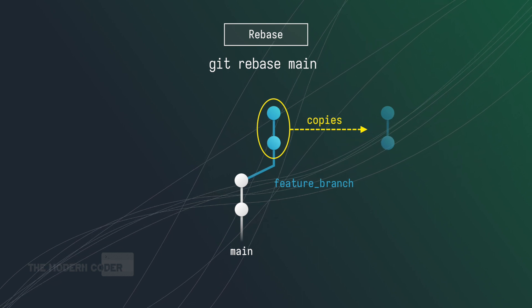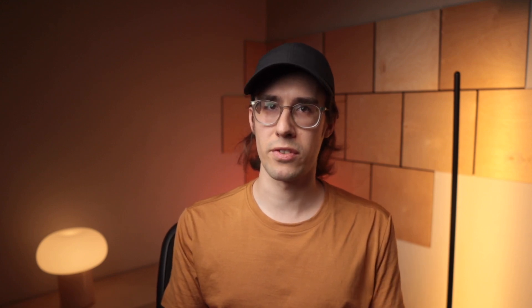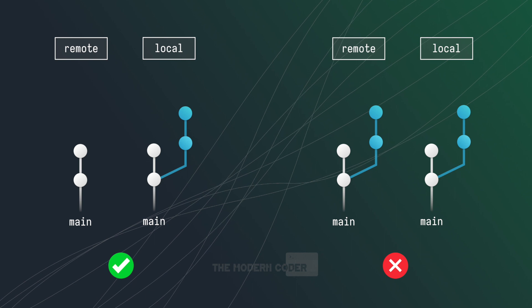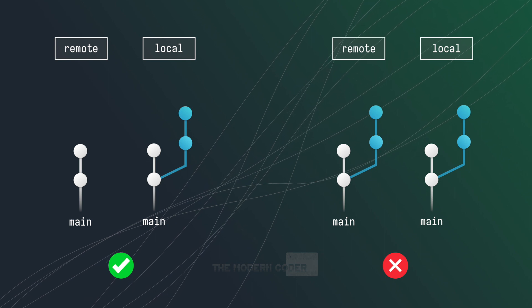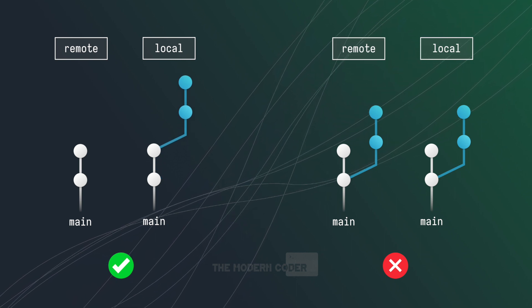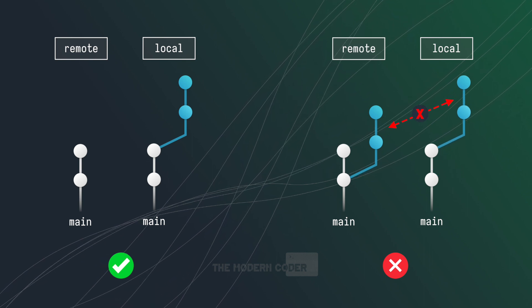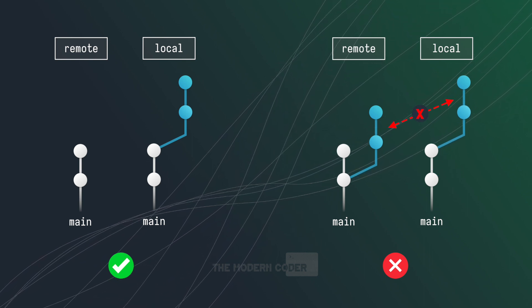For many intents and purposes this distinction is not very important. However, you need to be aware of this if the branch you're rebasing on is shared by other contributors. As a rule of thumb, if your feature branch is local only, rebase is pretty safe. If not, avoid rebase — because that operation technically erases and then rewrites history, which can cause issues for other contributors if they've already pulled down the original commits.